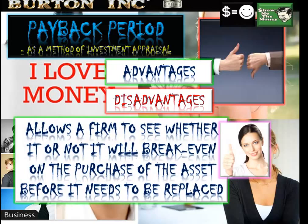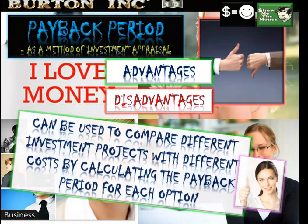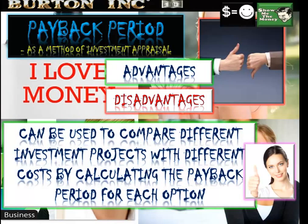Using the payback period, firms can see whether they'll earn enough net cash flows to purchase the asset before it needs to be replaced. If the useful life of an asset is eight years but the payback period is ten and a half years, the business is very unlikely to go ahead. You can also compare Project A versus Project B and choose the one with the shortest payback period.